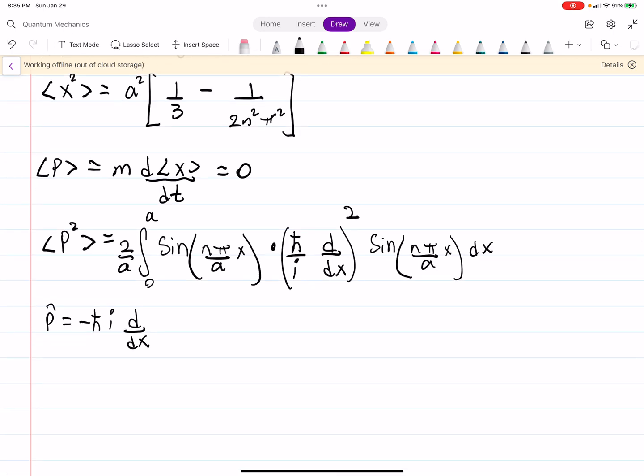So, what we need to do is, we can factor this out a little bit. I'll clean it up a little bit here. We have 2 over a times h bar squared. And then i squared is just negative 1. So, that's just a minus sign.